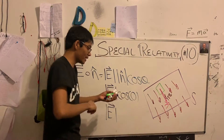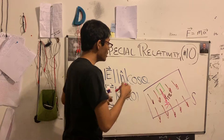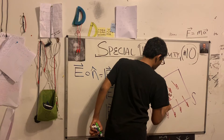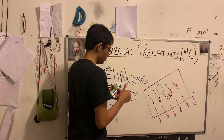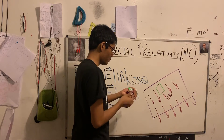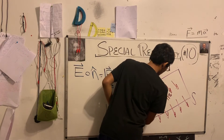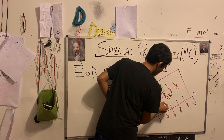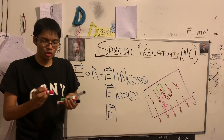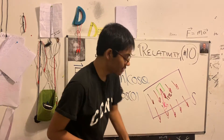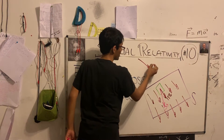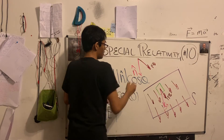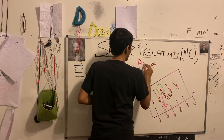Now let's complicate things a little bit. Let's complicate it by making the angle between my electric field vector and my unit normal greater than zero. Let me erase my old unit normal and draw a new unit normal at some angle. Let's zoom in — I have my original electric field vector E-hat, and my unit normal vector N-hat, and they are separated by some angle theta.